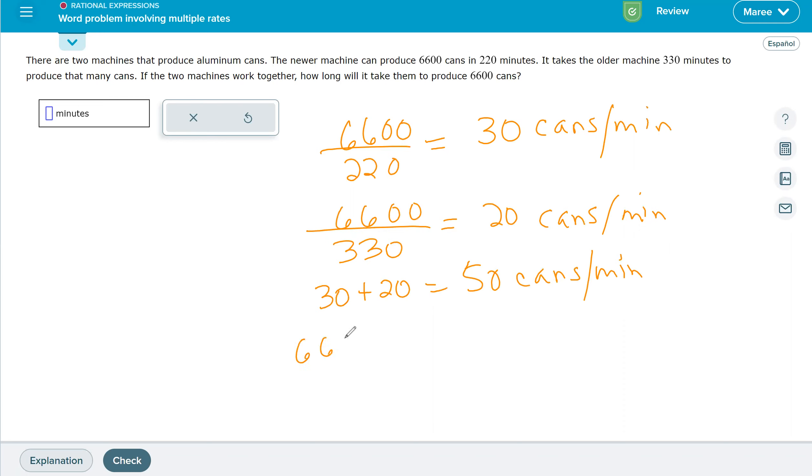So we want to know how long is that going to take to do 6,600 cans. We're going to divide that by 50 cans per minute, and we get 132 minutes.